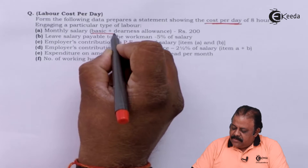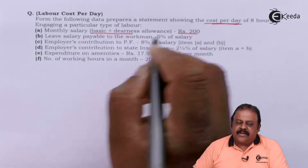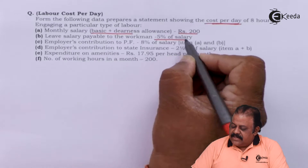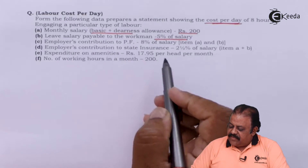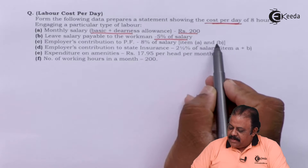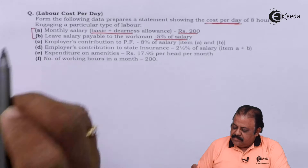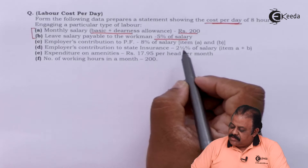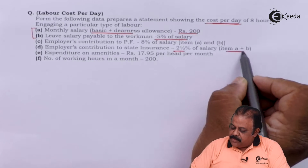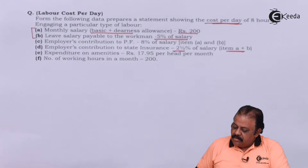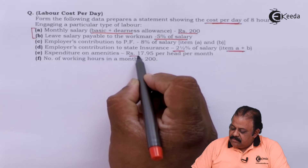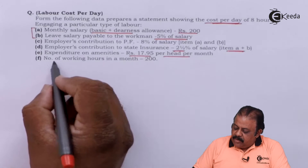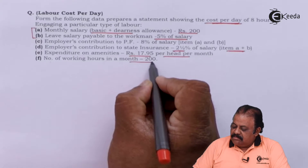Monthly salary, which is basic plus dearness allowance: rupees 200. Leave salary payable to workmen: five percent of salary. Employer's contribution to provident fund: eight percent of salary (items A and B). Employer's contribution to state insurance: two and a half percent of salary (items A and B). Expenditure on amenities: rupees 17.95 per head per month. Number of working hours in a month: 200 hours.